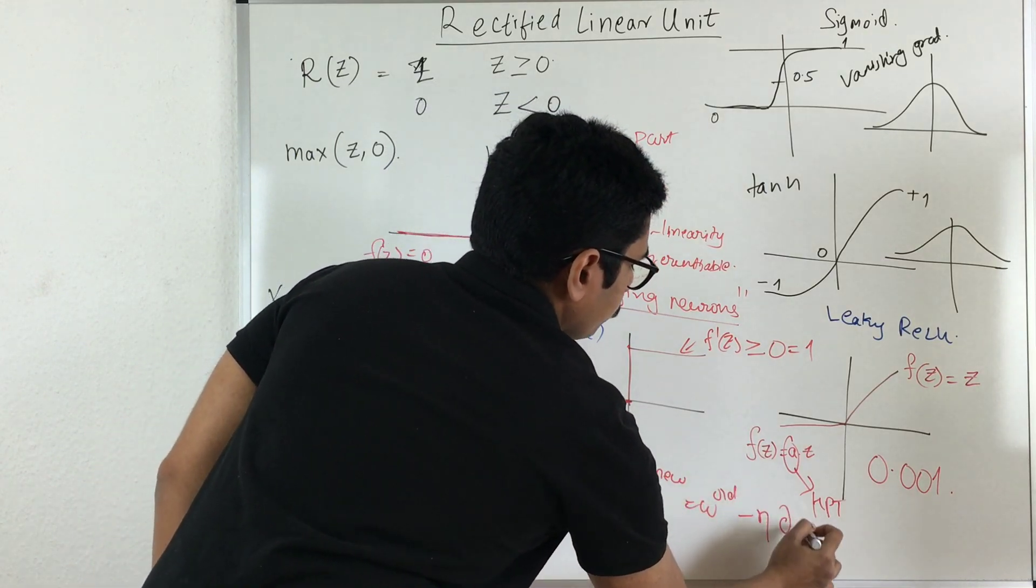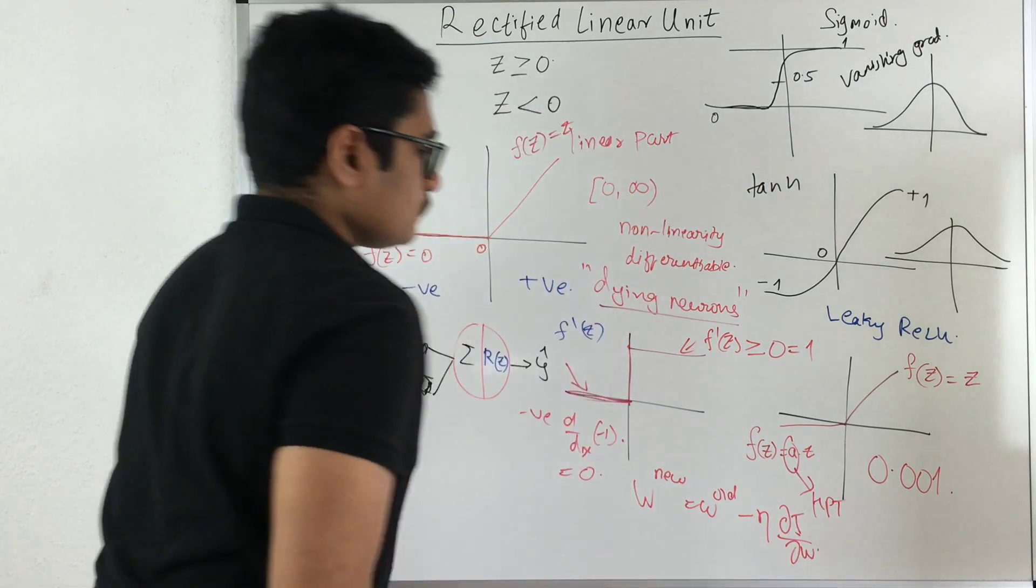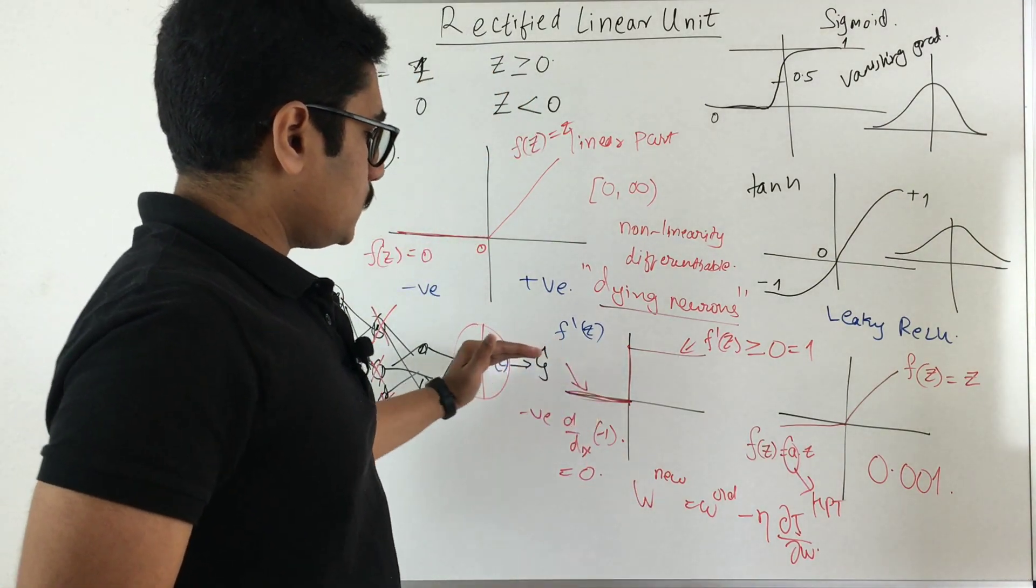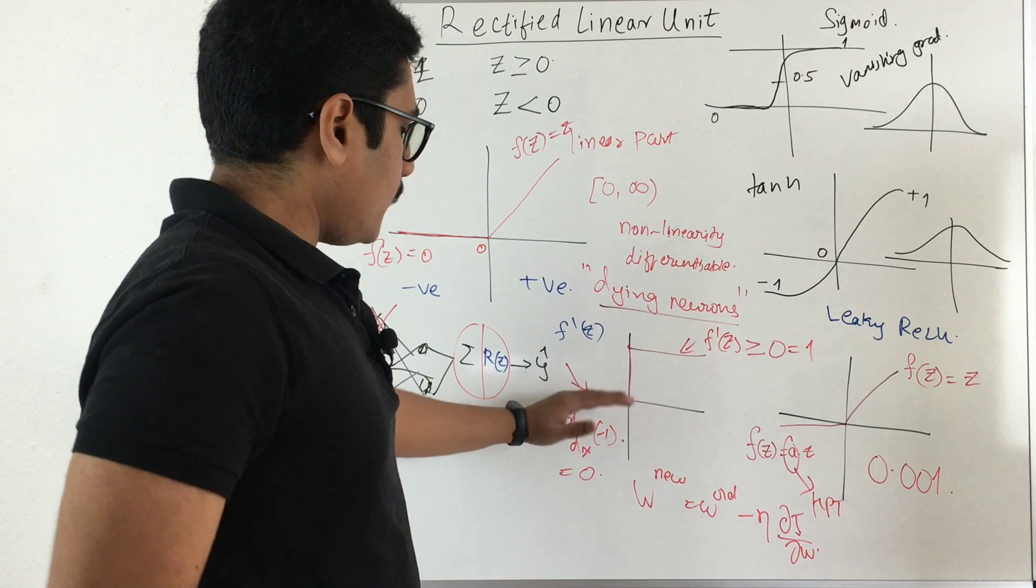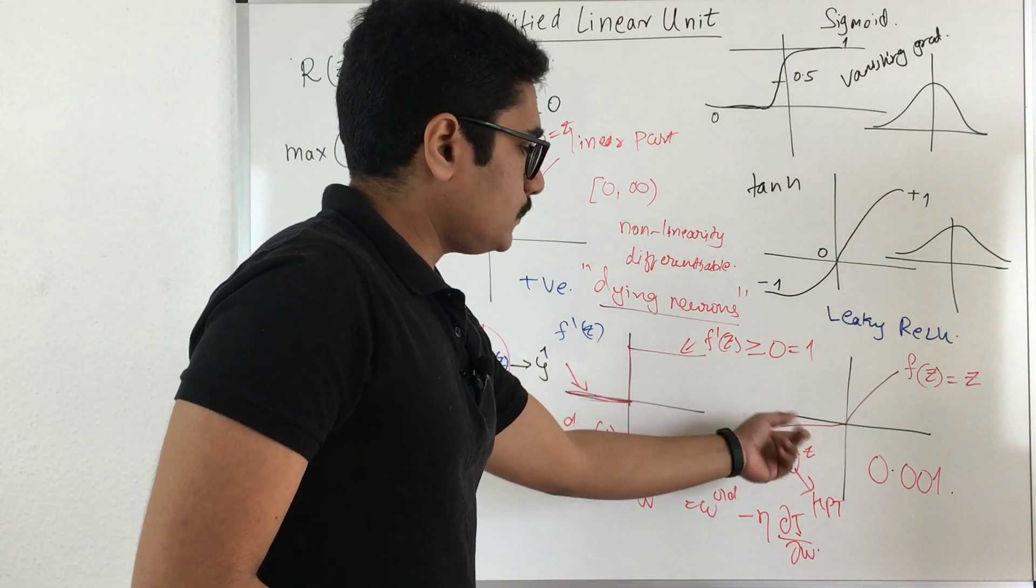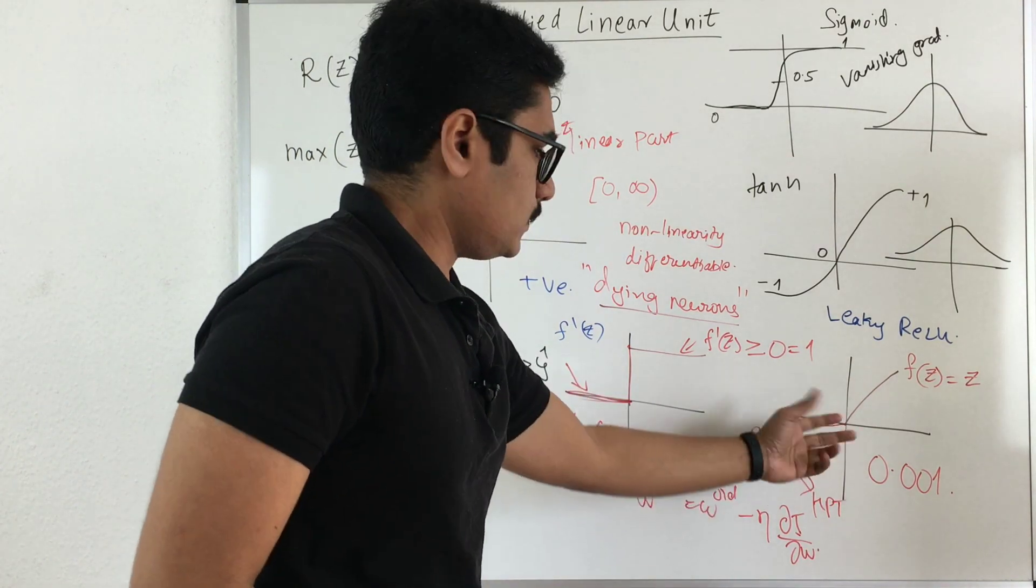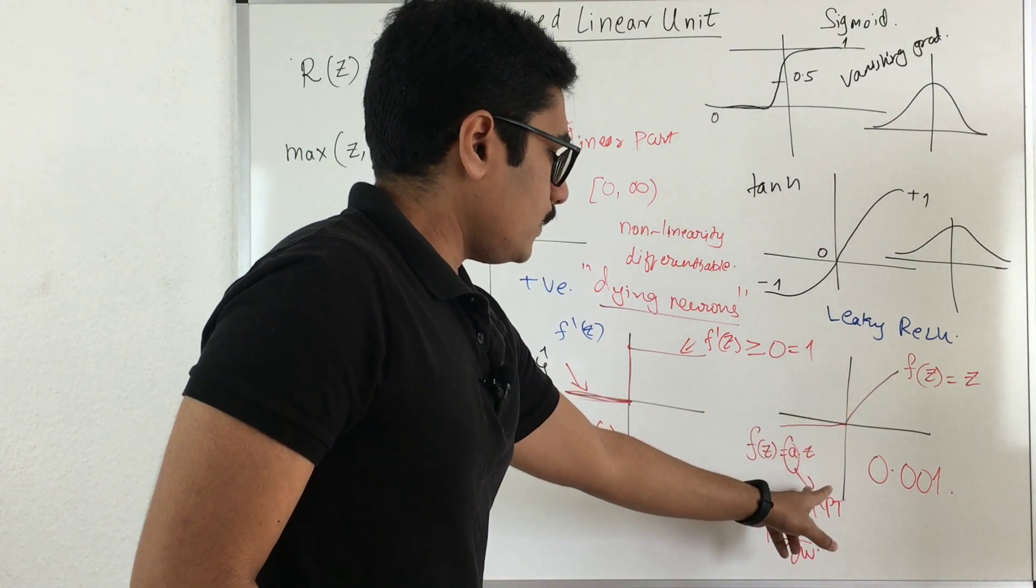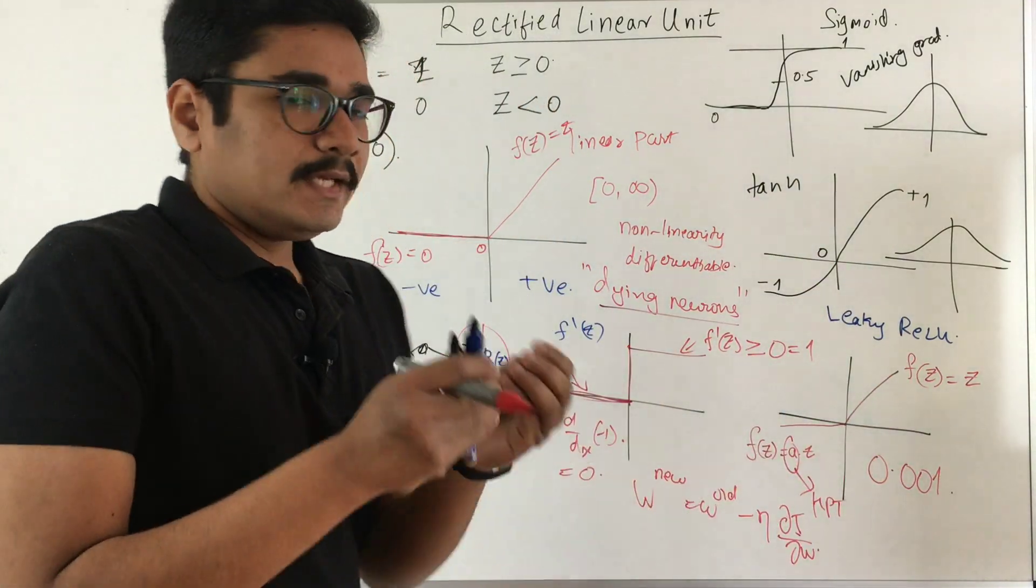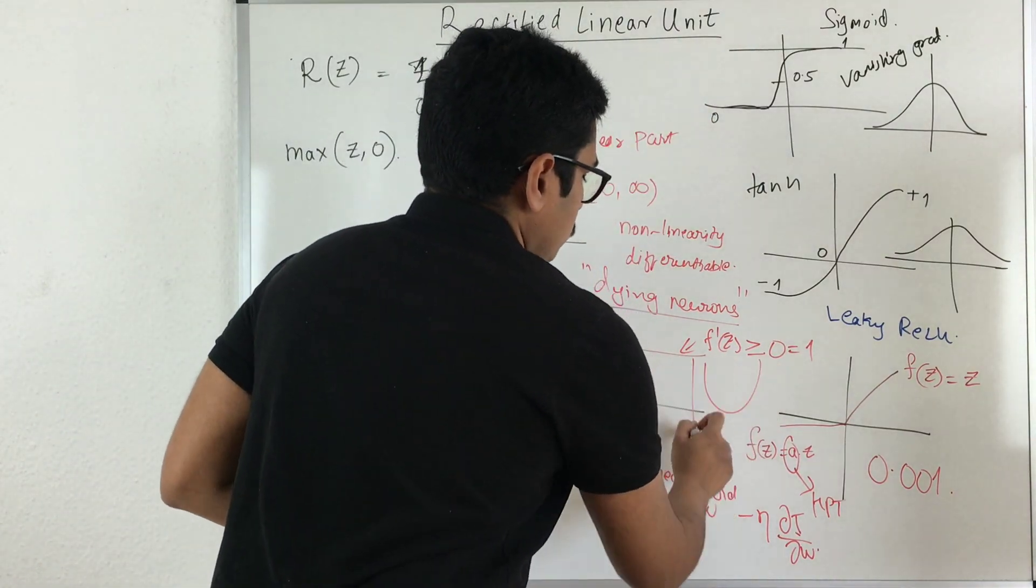So when you update the weight, that is w new is equal to w old minus eta into d of j by d of w you apply this. So here the neuron was just approaching to zero and it will die eventually. But here what happens is that since you have put a leak over this, so this is where the leak happens. So when you just apply this value, so it's not equal to zero, it is approximately equal to zero.